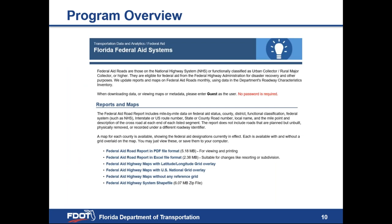Federal-aid eligible roadways are those shown on the approved federal-aid map and the list maintained by the FDOT State Planning Office. The hyperlink on this slide will take you to the Florida Federal Aid System page on our website, where you can access the Federal Aid Report in PDF or Excel format, as well as Federal Aid Highway Maps in various formats. The Federal Aid Report in Excel file format is the most user-friendly, as you can filter the data by district, county, etc.